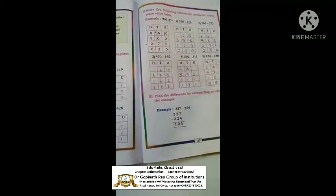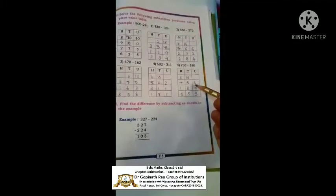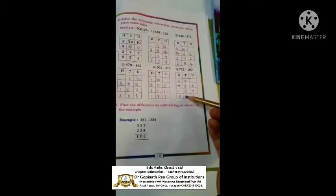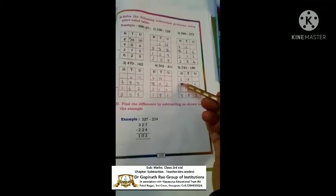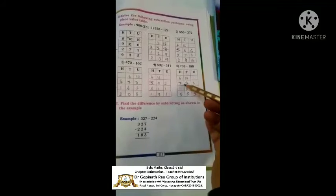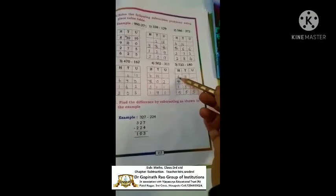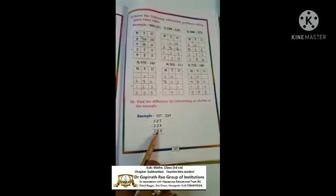They have given so many examples. See 733 minus 180: 3 minus 0 is 3. We can't subtract 8 from 3, so we take a borrow — this becomes 13. 13 minus 8 is 5. Then this back number becomes 6 because we took a borrow, so 6 minus 1 is 5. Because it is in the tens place it counts as 13, so 13 minus 8 is 5, and the hundreds becomes 6 minus 1 is 5. The answer is 553.